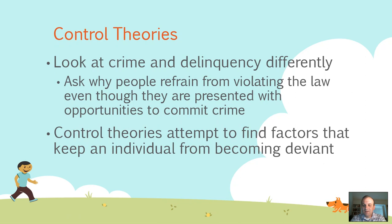Control theories. In previous videos we talked about learning theories, deterrence, anomie theory, and Merton's theories. What those theories essentially try to do is look at what makes people commit crime — what factors influence an individual to commit crime. Control theories flip it on its head and ask what makes individuals not commit crime, essentially asking why people refrain from violating the law even though they're presented with opportunities to do so.